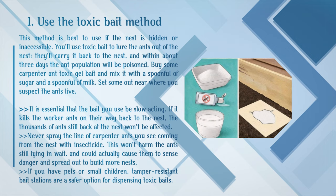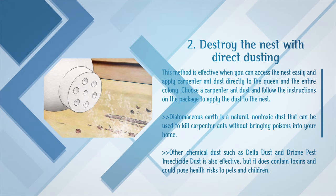Spraying insecticide could actually cause ants to sense danger and spread out to build more nests. If you have pets or small children, tamper-resistant bait stations are a safer option for dispensing toxic baits. Method 2: Destroy the Nest with Direct Dusting. This method is effective when you can access the nest easily and apply carpenter ant dust directly to the queen and the entire colony. Choose a carpenter ant dust and follow the instructions to apply it to the nest. Diatomaceous earth is a natural, non-toxic dust that can kill carpenter ants without bringing poisons into your home. Other chemical dusts such as Delta Dust and Drione pest insecticide dust are also effective, but they do contain toxins and could pose health risks to pets and children.